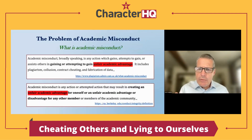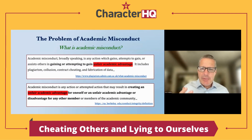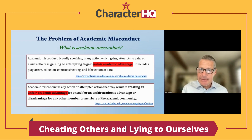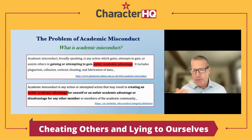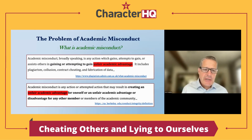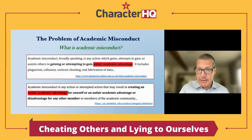Why is that a problem? Let's talk about a definition. What is academic misconduct? It's the idea of gaining or attempting to gain an unfair academic advantage. Using definitions from the University of Cambridge and UC Berkeley, common to both is the idea that when I'm cheating, I'm getting an unfair advantage for myself and, by definition, unfairly disadvantaging others. That's where this becomes a moral matter.